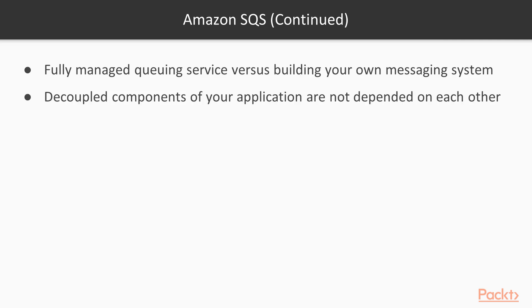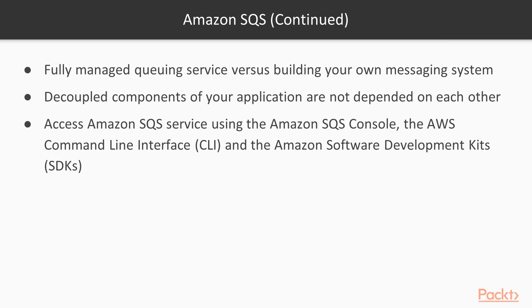It enables you to decouple components of your applications such that they're not dependent on each other and can run and fail independently. When building systems in the cloud, you often need to design multi-tier architecture. Using Amazon SQS you can decouple application components to offer higher levels of resilience, fault tolerance, availability and build a distributed solution. You can access and configure SQS using the SQS console, the AWS CLI and the SDKs.